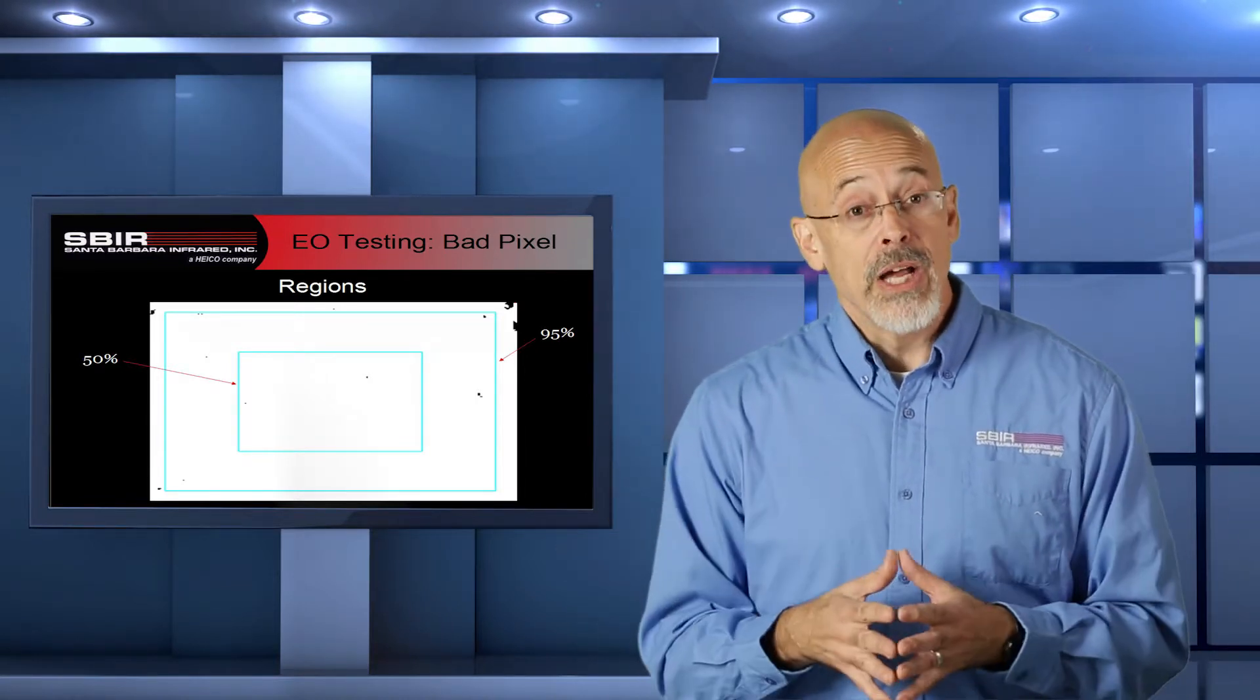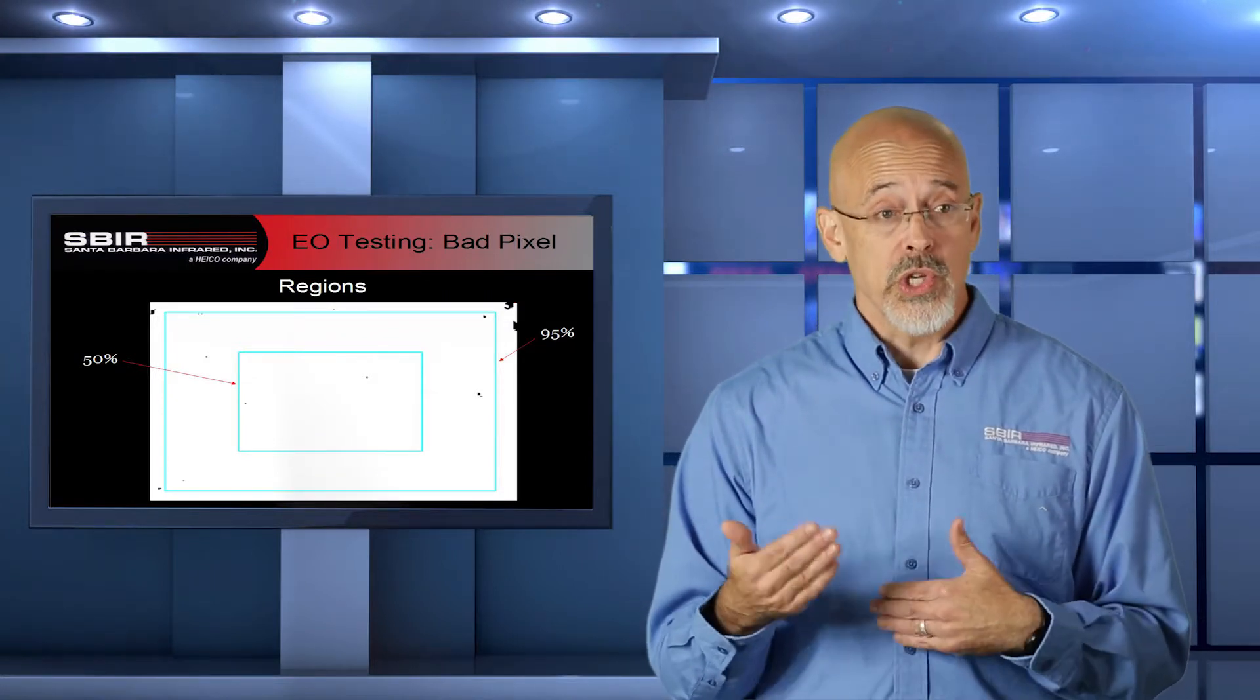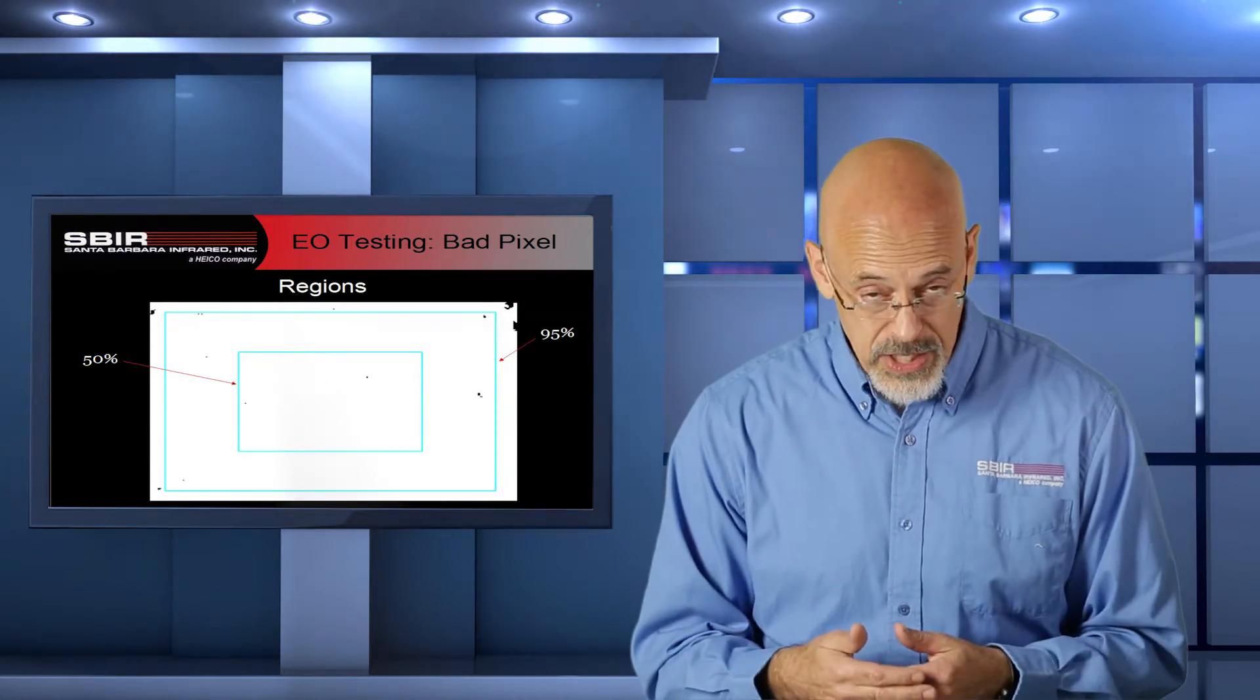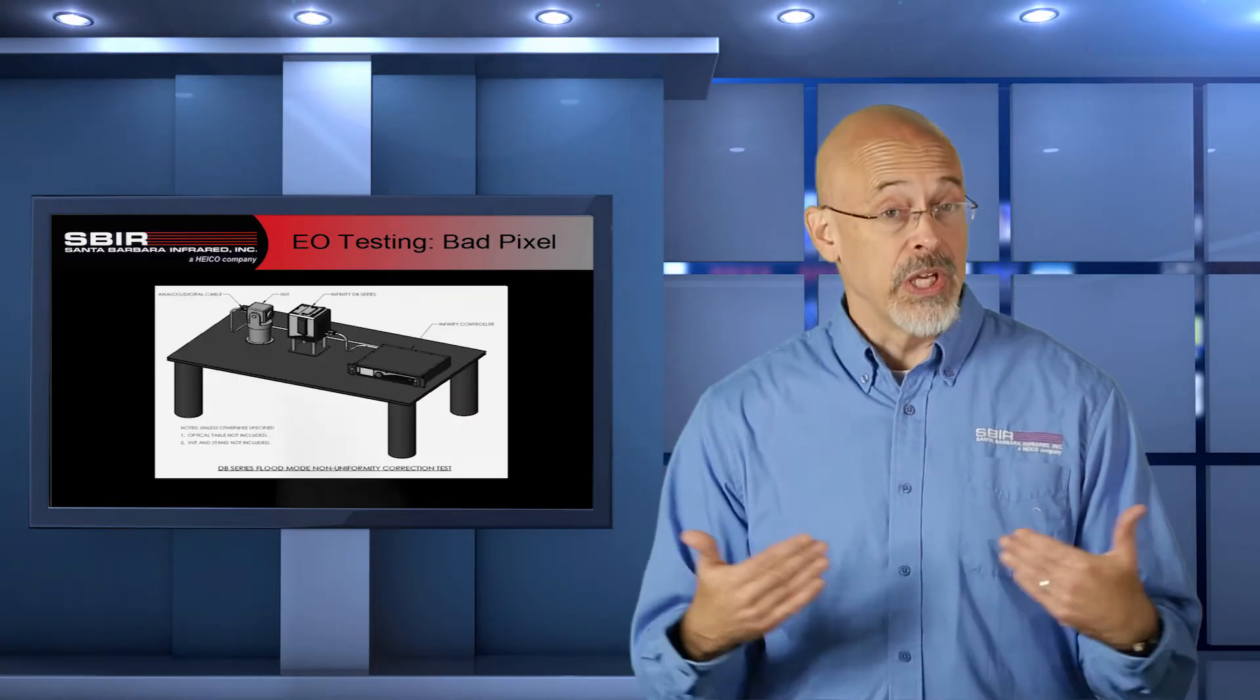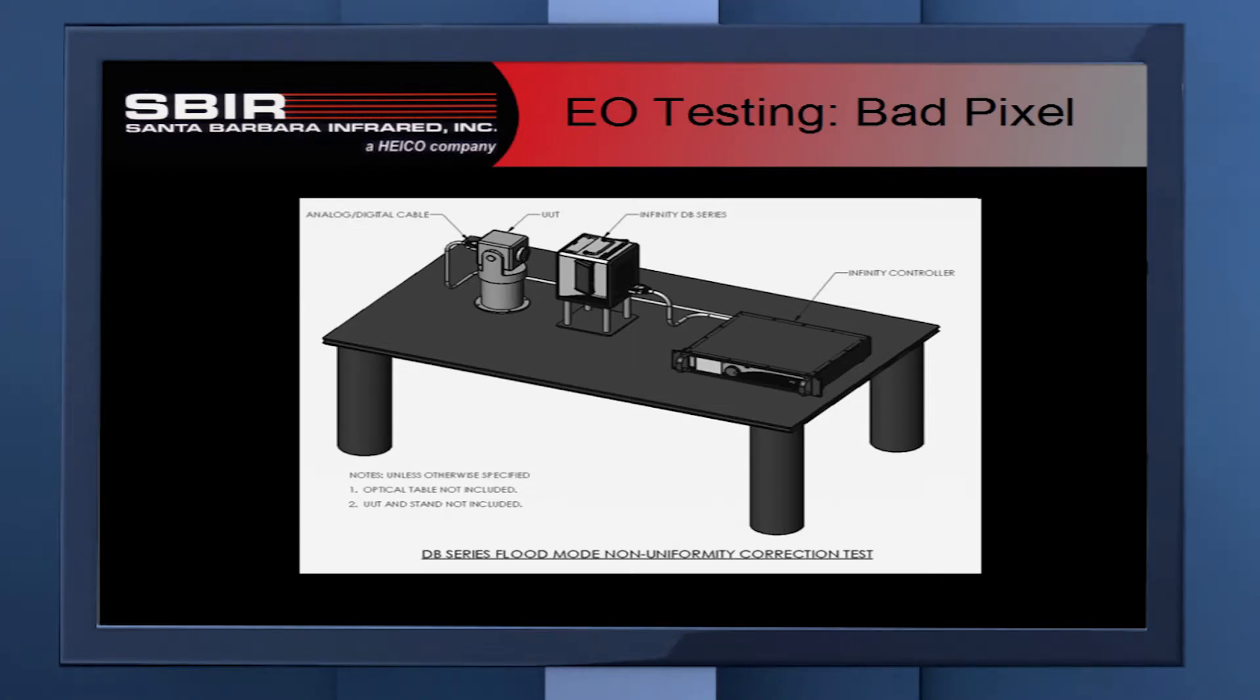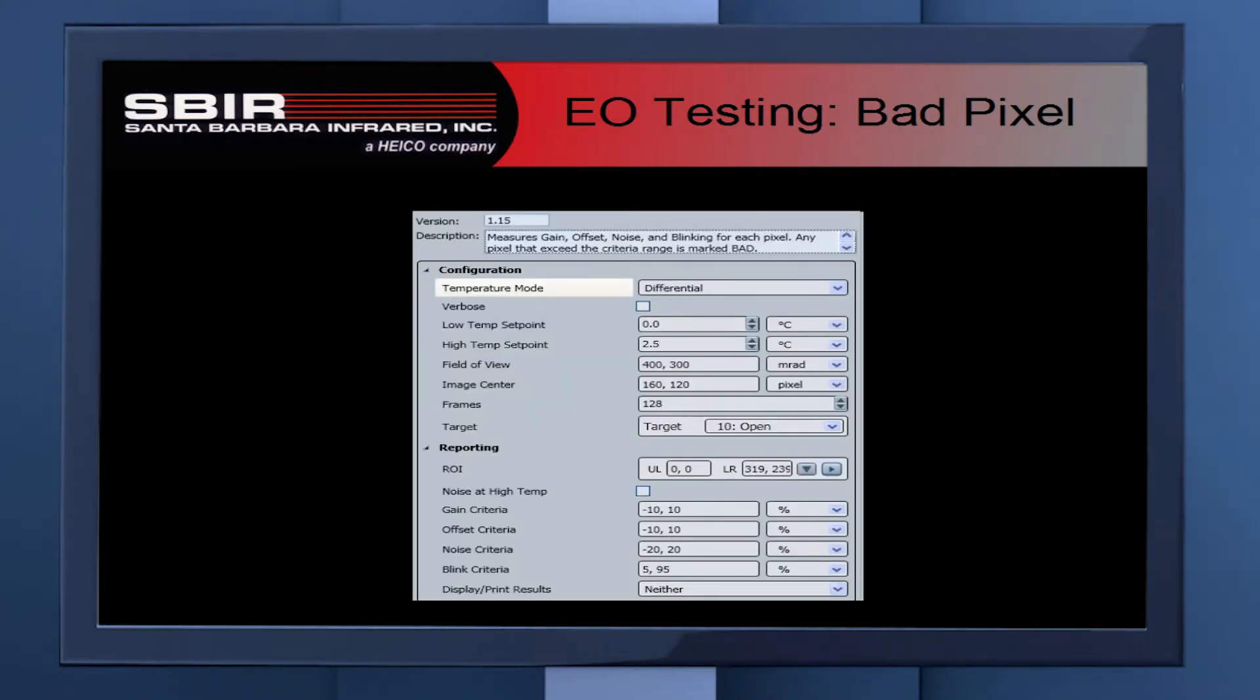So, how do we go about doing this test? In this case, we actually need a calibrated source, because we're going to be measuring the gain on these pixels. It's similar to what we're doing with SITF. So we use a calibrated blackbody, and we are going to present that blackbody's radiation at two different temperatures. We can do this either in a flood fashion, where we put the blackbody right up against the camera, or we can do it in a projected system where we project out that image in a known area, so we know what part of the camera we're illuminating at any given time.